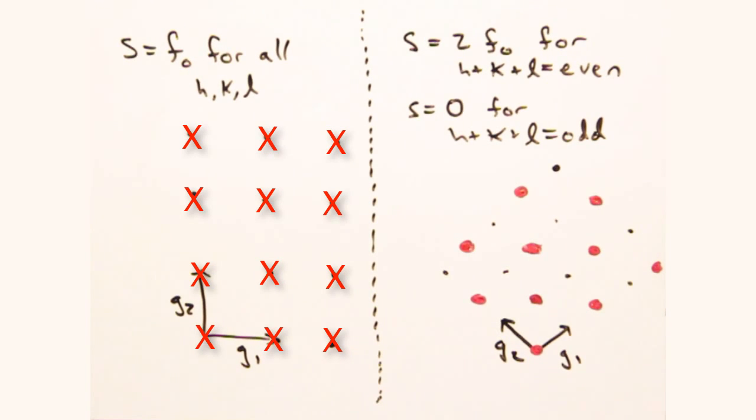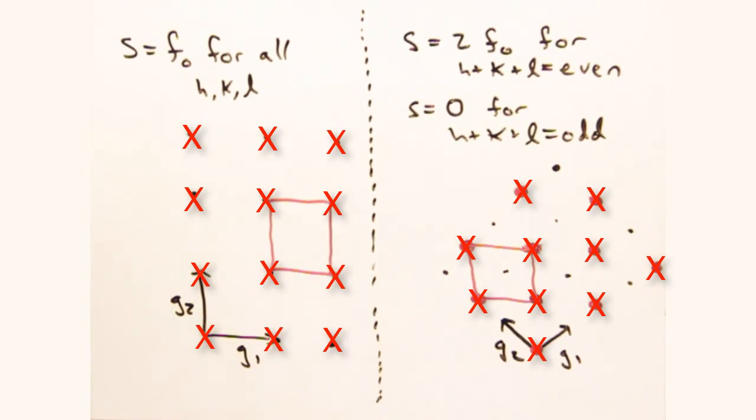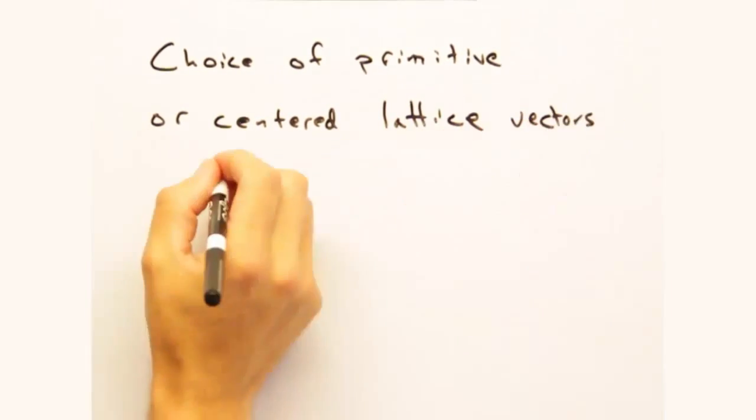So now let's mark an x for every expected peak position for this case. And we can see the spacing of expected peak positions is the same in both cases. So symmetry makes no difference when it comes to diffraction.